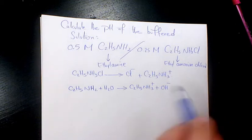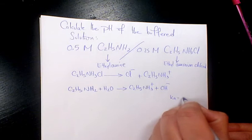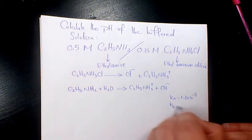And the acid dissociation constant is 1.8 times 10 to the power of negative 11, and KB is 5.6 times 10 to the power of negative 4.